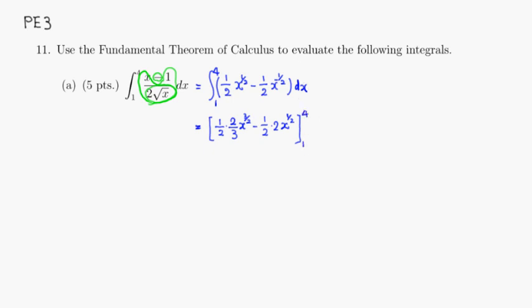Then we can clean up a little bit. So you have 2 on top and 2 on the bottom cancel out. 2 on top, 2 on the bottom, cancel out.